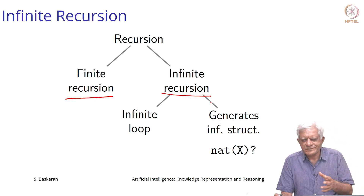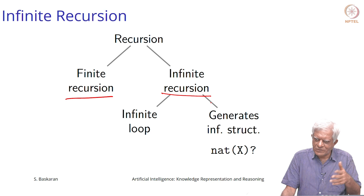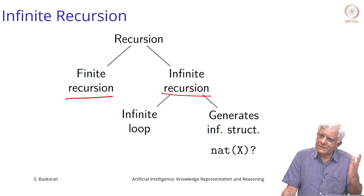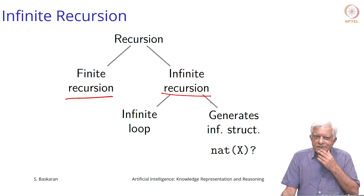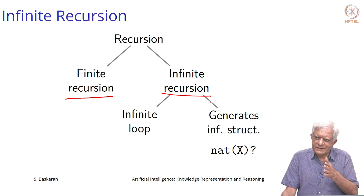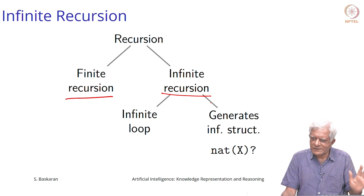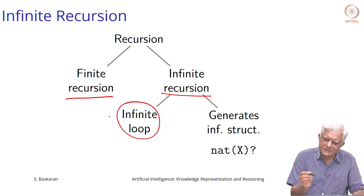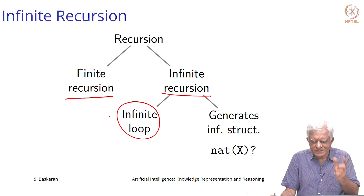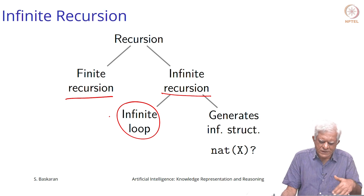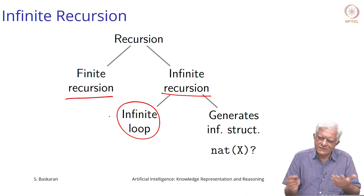Infinite recursion can be of two types. One is getting into an infinite loop — for example, a rule that says if x is married to y then y is married to x can loop forever. We also saw the definition of 'above' and 'below' which are opposites of each other and could call each other infinitely. The other way is when you are looking at infinite structures like the set of natural numbers.